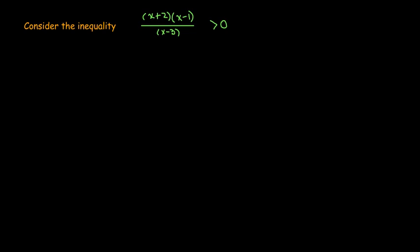We'd like to find the solution set, which is going to consist of possibly more than one interval. Consistently, we're going to have 0 on one side of our inequalities. If it's not there, we'll have to make it 0 and do something to the other side. Because if it's greater than 0, it would be positive; if it were less than 0, it would be negative.